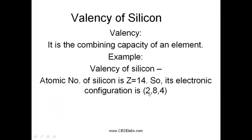Here, the 2, 8 and 4 are nothing but number of electrons present in the shells K, L and M shells. This can also be written as 1s2, 2s2, 2p6, 3s2, 3p2.